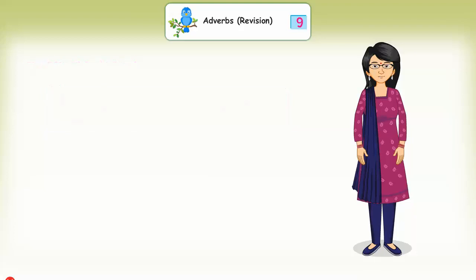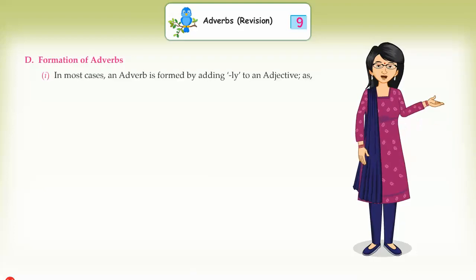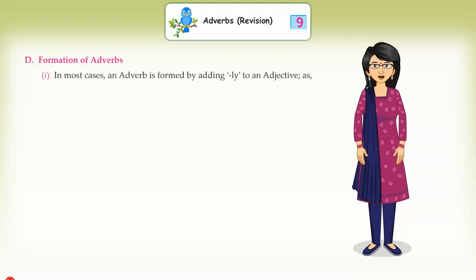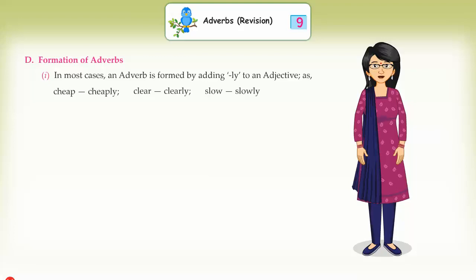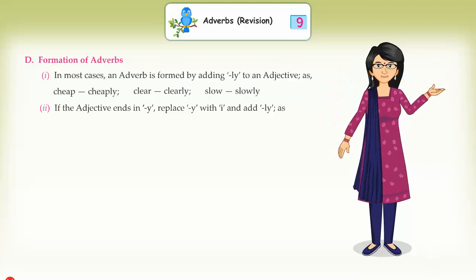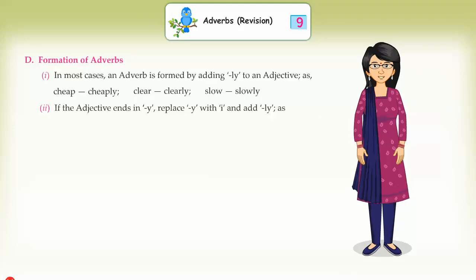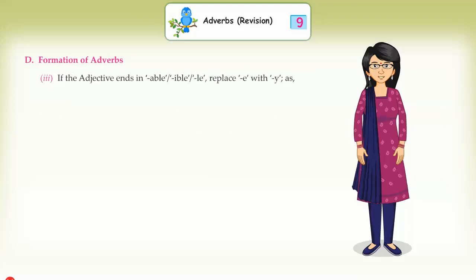D: Formation of adverbs. (1) In most cases, an adverb is formed by adding '-ly' to an adjective. Examples: cheap → cheaply, clear → clearly, slow → slowly. (2) If the adjective ends in 'y', replace 'y' with 'i' and add '-ly'. Examples: easy → easily, angry → angrily.